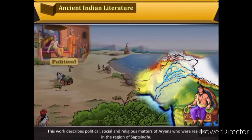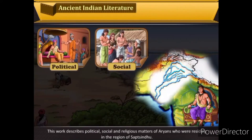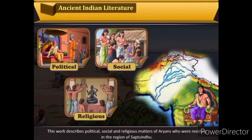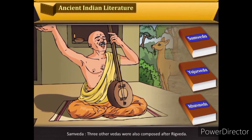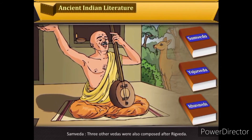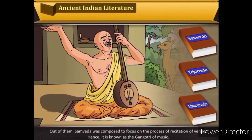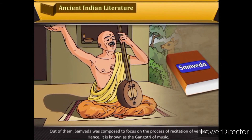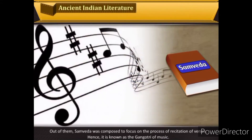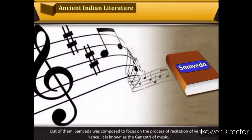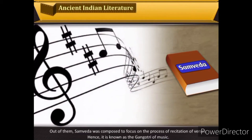This work describes the political, social and religious matters of the Aryans who were residing in the region of Sapta Sindhu. Three other Vedas were also composed after the Rig Veda. The Sama Veda was composed to focus on the process of recitation of verses, and hence it is known as the Gangotri of music.